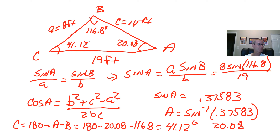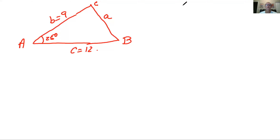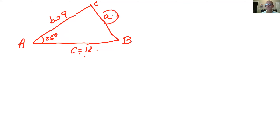I paused the recording to put up the second example for this lecture: the Laws of Cosines using two sides plus the adjacent angle. The adjacent angle is the one in between the two given sides. When you do this calculation, the first thing with Laws of Cosines is you can calculate the other side.